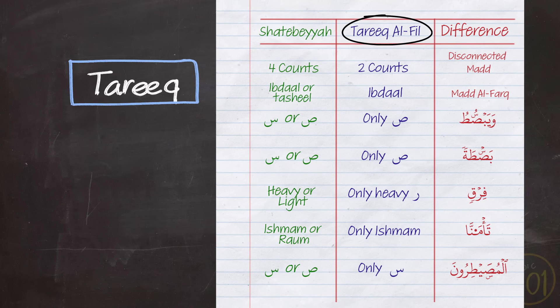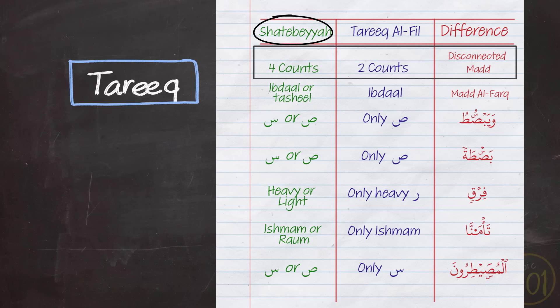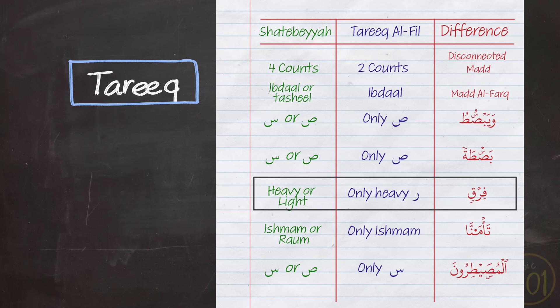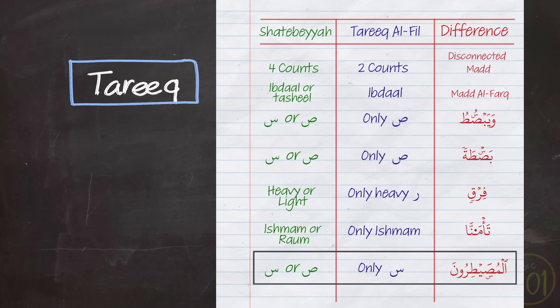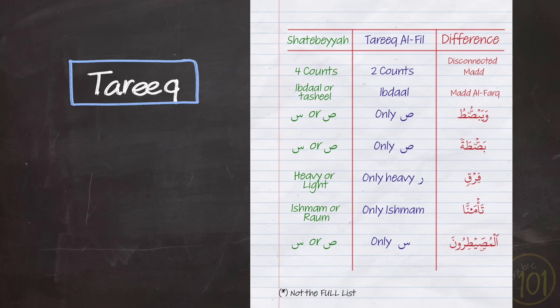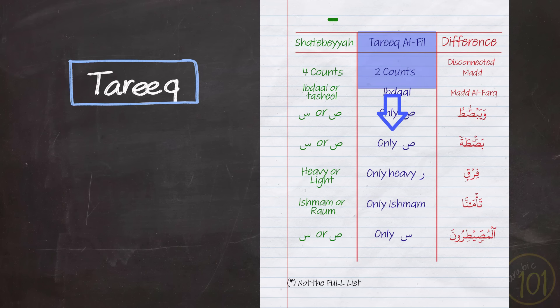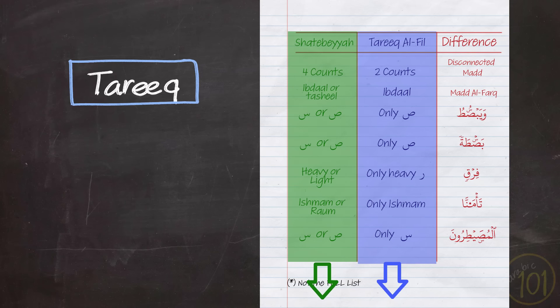In Al-Fiyl, Madh Munfassil is only elongated for two counts, but in Ash-Shatubiyya it is for four counts. The word 'firq' is pronounced with heavy ra in Al-Fiyl, but in Ash-Shatubiyya it can be pronounced with light ra 'firq' or with a heavy ra 'firq.' The word 'al-Musaytirun' is pronounced with seen in Al-Fiyl, and in Ash-Shatubiyya you can have it both ways — with seen or saad. These are the kinds of tajweed differences you should be following when reciting in a certain tariq.